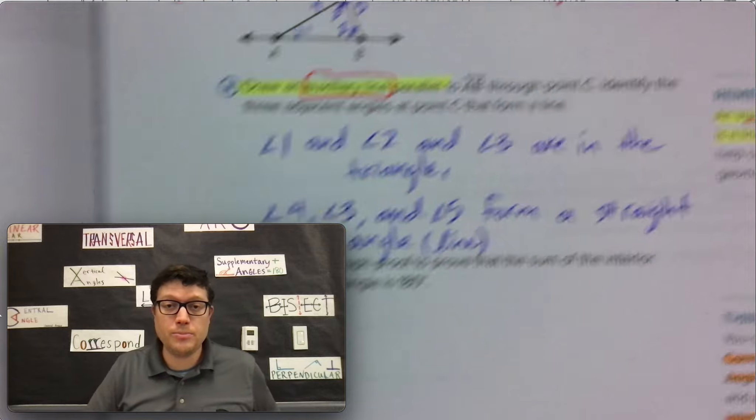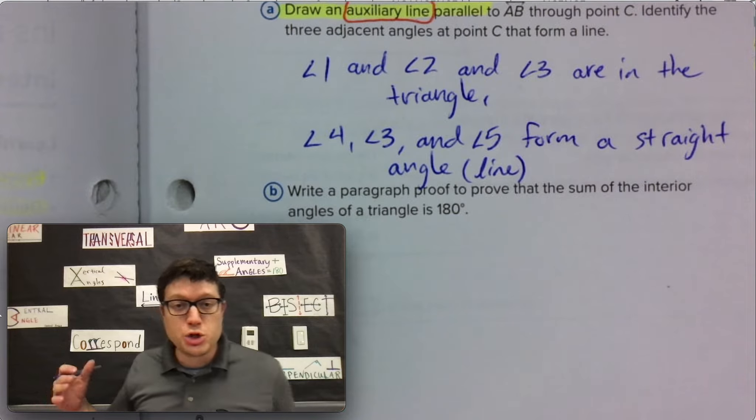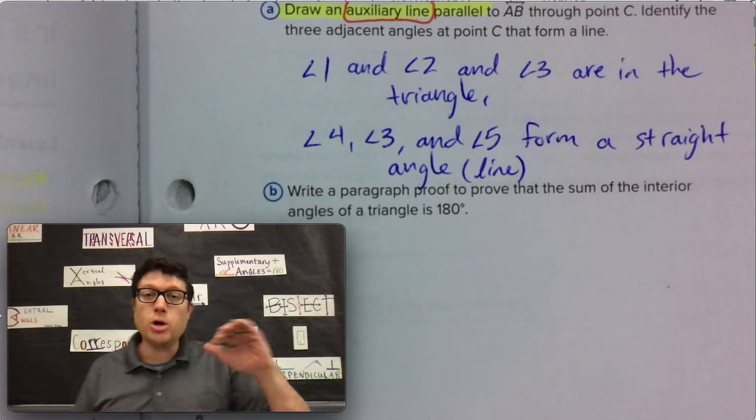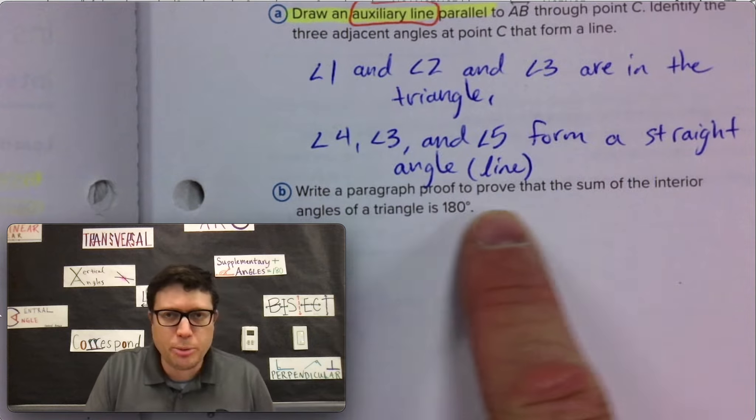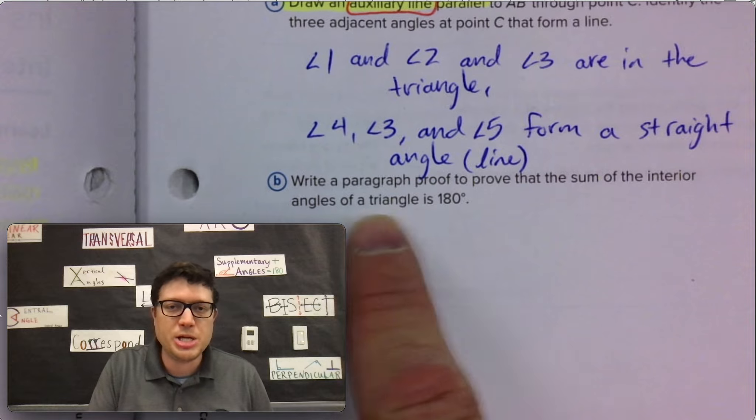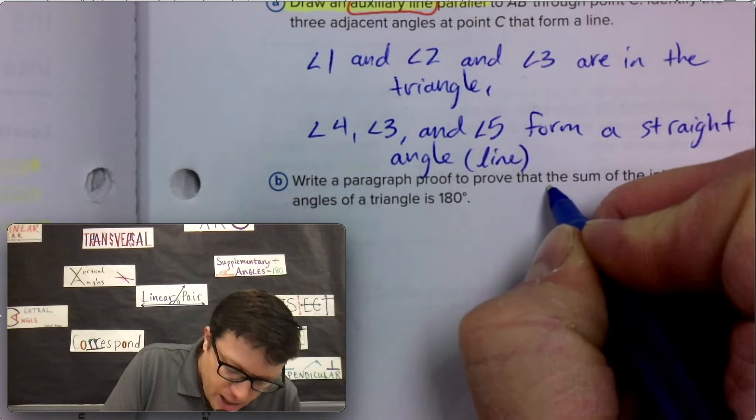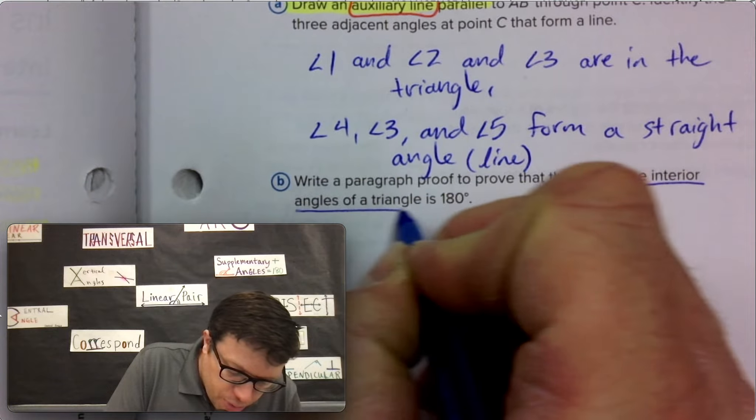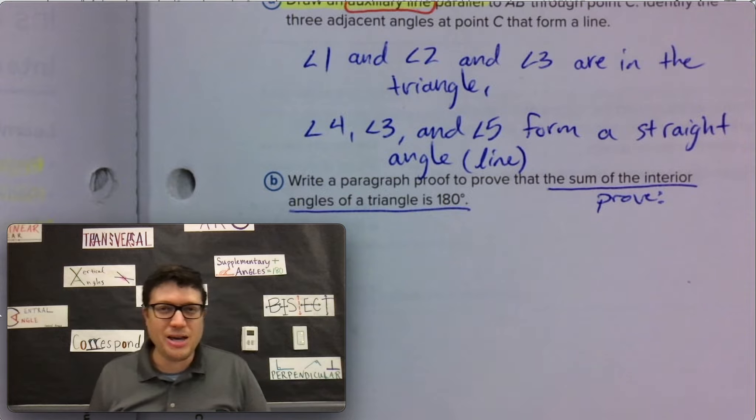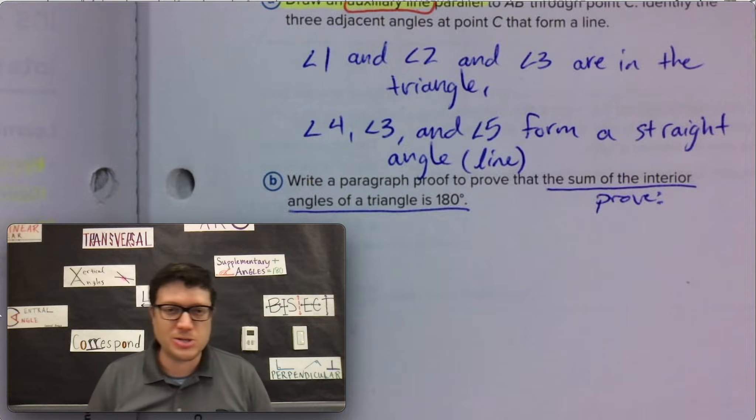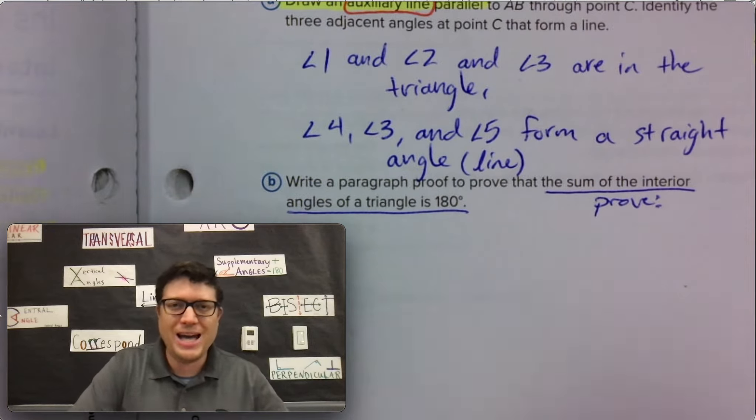Angle four, angle three and angle five form a straight line, forming a straight angle 180 degrees. So if we're going to use that fact, write a paragraph proof to prove that the sum of the interior angles of a triangle is 180. This is our prove statement. We need to identify the given, we need to identify the proven. I'm going to say right away, look at that diagram.